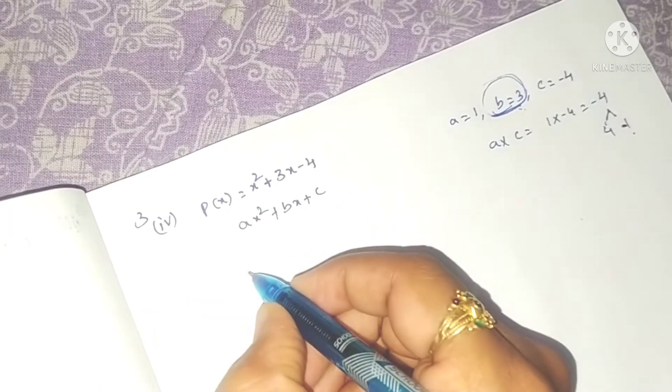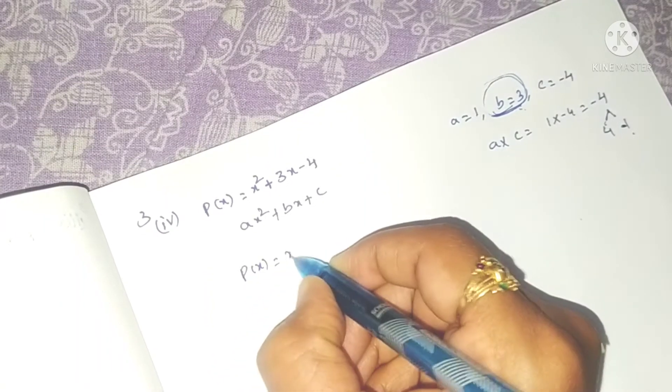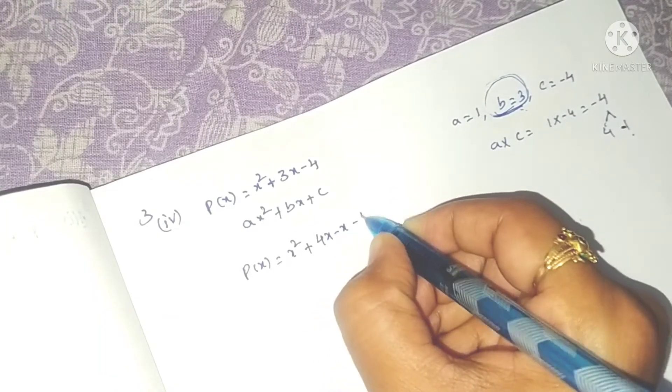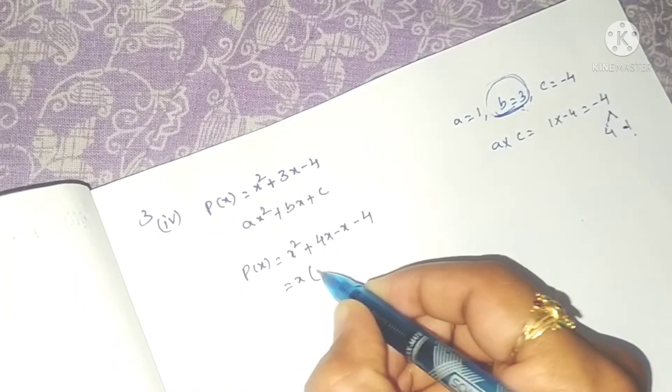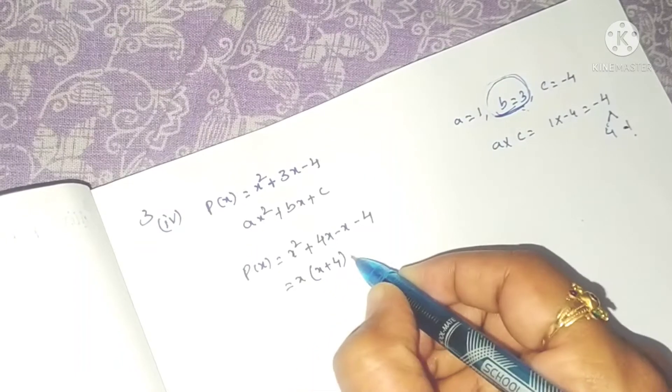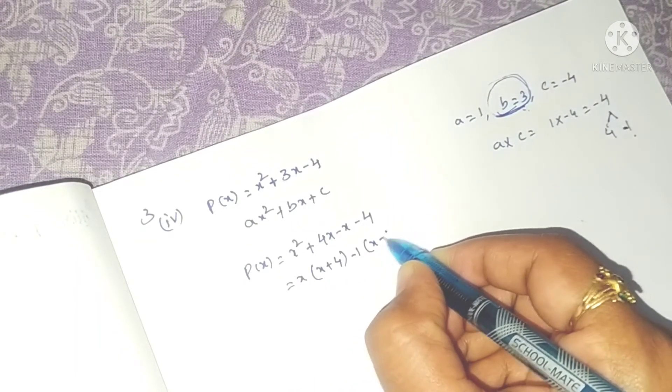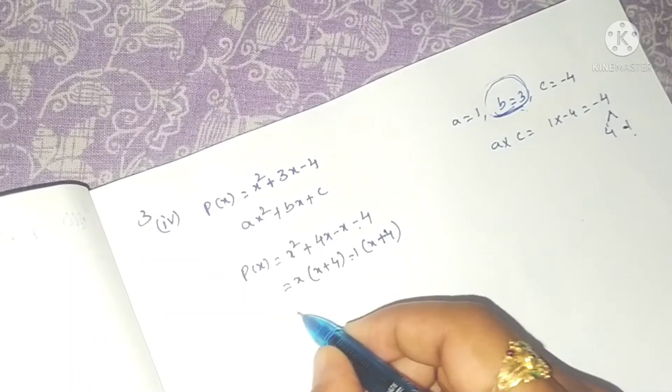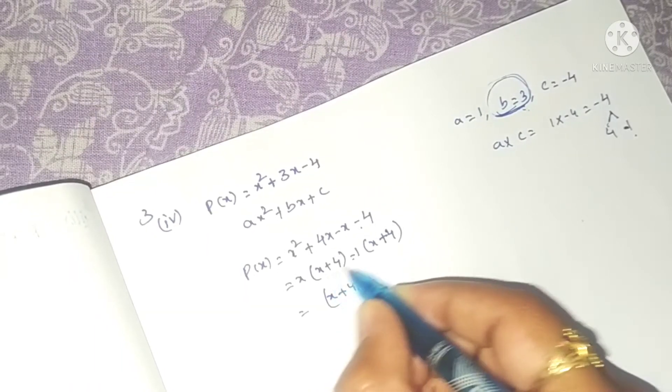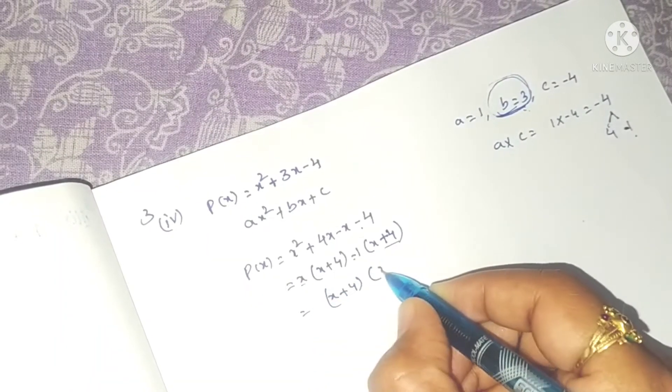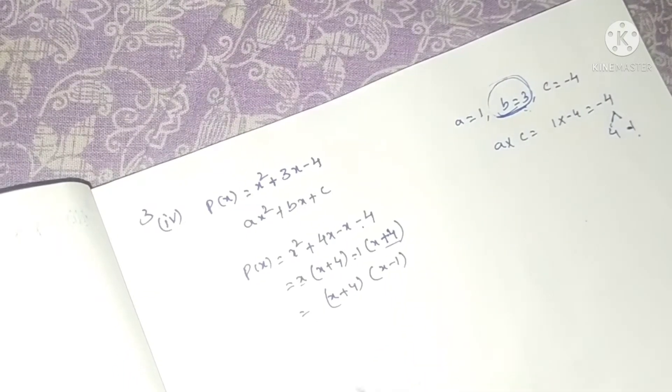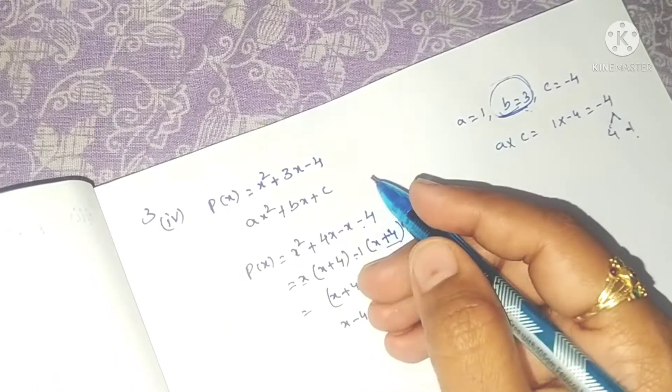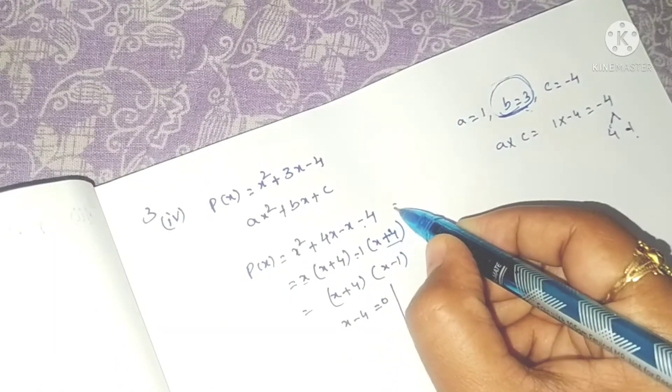That's 4 and minus 1. So p of x equals x square, we can write 3x as 4x minus x minus 4. Taking x common, we get x times x plus 4, and minus 1 times x plus 4.